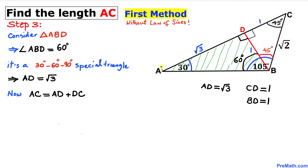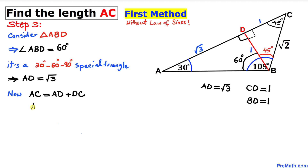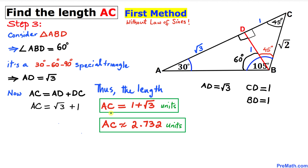We can see that the full side length AC equals the sum of the two individual lengths: AC = AD + DC. Therefore AC equals square root of 3 plus 1. So the length AC turns out to be 1 plus square root of 3 units, which is approximately equal to 2.73 units.